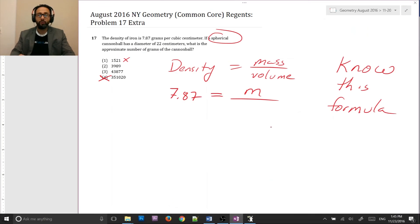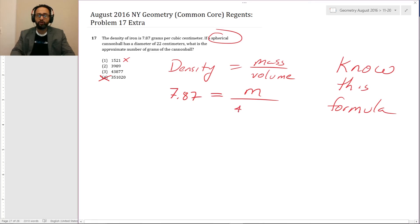Okay. So we use that, four thirds pi r cubed, which is equal to M over four thirds pi times R is, let's see. Well, we're given the diameter. D is equal to 22 centimeters divided by two. Then we get R is equal to 11 centimeters. Okay. 11 cubed.